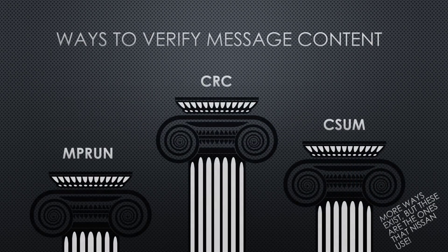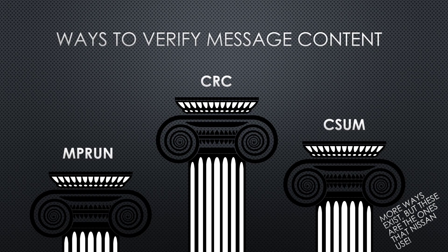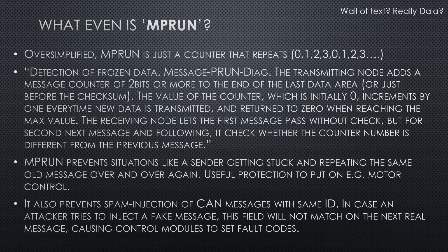From working with the Nissan LEAF, there are 3 different error checking methods that I noticed they use: MRUN, CSUM, and CRC. Some CAN messages have 1 or 2 of these tacked onto them to prevent communication errors, corruptions, faults, tamperings, etc. So let's start with the simplest one: MRUN.